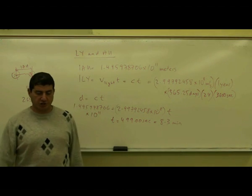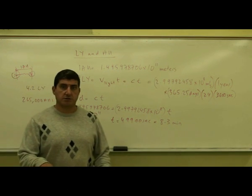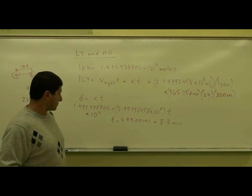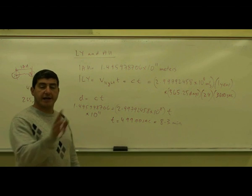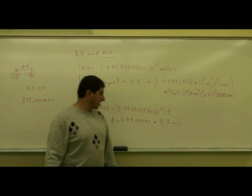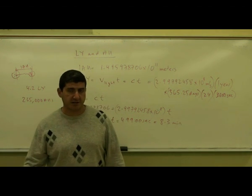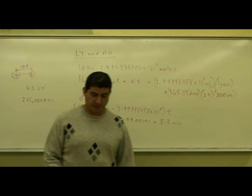Okay, so now you can see the relationship between the AU, the light year, and also the kilometers, and meters, and all of that. And you also see how long it takes light to get here from the Sun. In the next video, I'm going to show you the relationship between the parsec and the light year. Thank you.